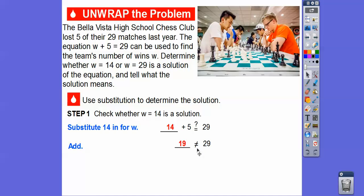And so 19 does not equal. An equals bar with a slash going through it means does not equal. And 19 does not equal 29. So the equation is not true when w equals 14. So 14 is not a solution.